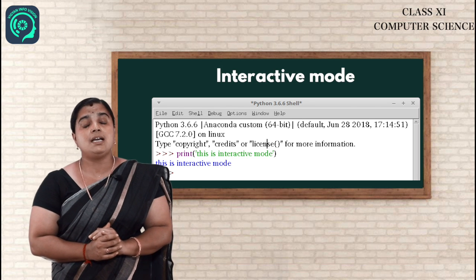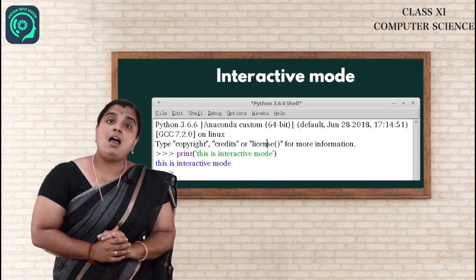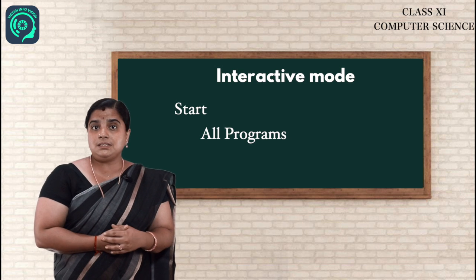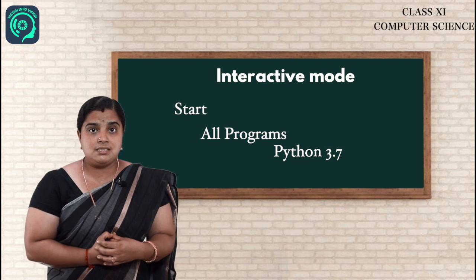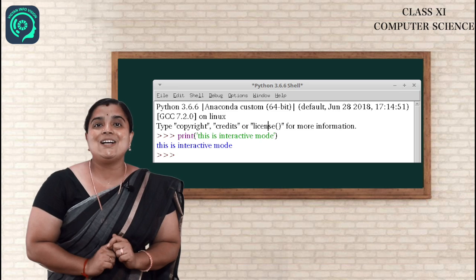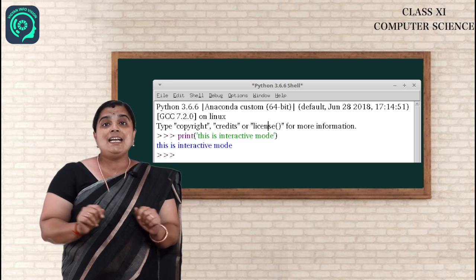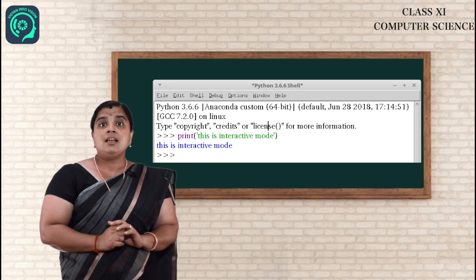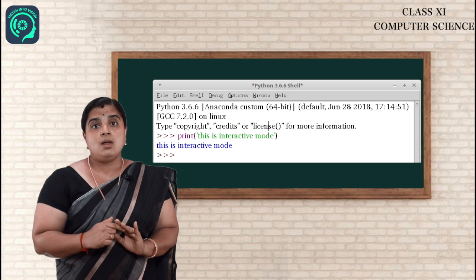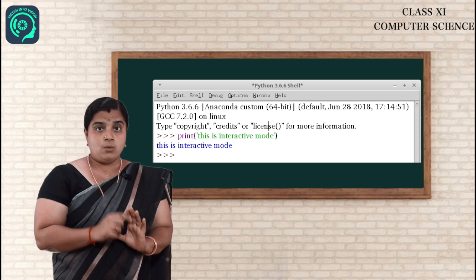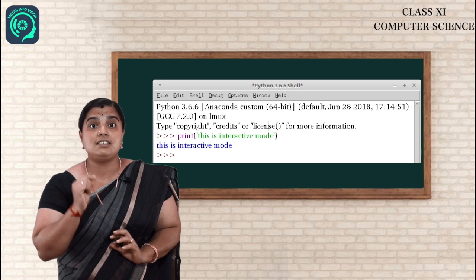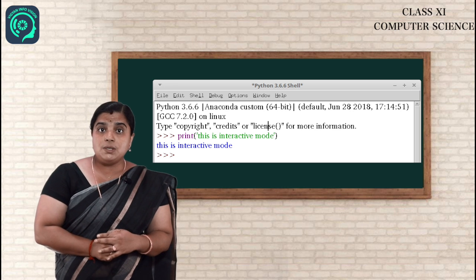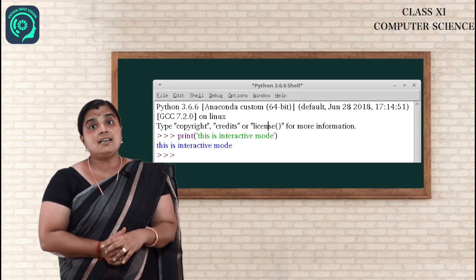Let me explain interactive mode in depth. After installing Python, go to the Start button, click on All Programs, then Python 3.7, then select Python IDLE. A new window will be displayed — that is the platform for interactive mode. For example, if you type print('hello') and press Enter, the output will be 'hello'. If you type 10 + 15 and press Enter, it will print 25. Interactive mode is easier than script mode.